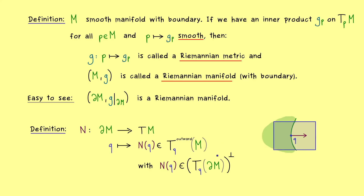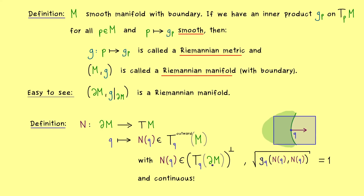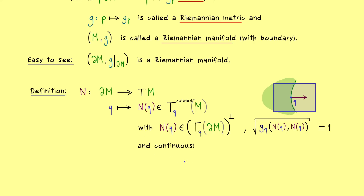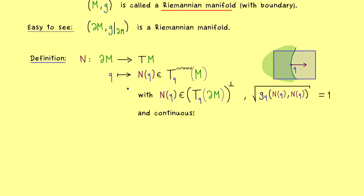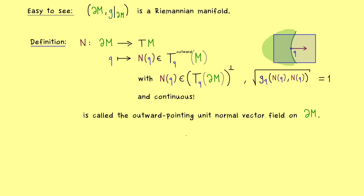In order to talk about this orthogonal complement, we definitely need a Riemannian metric to measure the angles. Moreover, the Riemannian metric gives us a length notion as well, and we want this normal vector to have length 1 at every point q — so the norm of Nq equals 1. This is what we call the unit normal vector field on ∂M. We also want this to be a continuous map, and this actually makes it a uniquely defined vector field. The common name for that is the outward pointing unit normal vector field on ∂M.